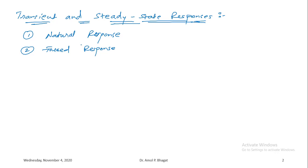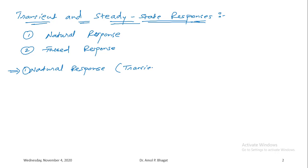In the difference equation topic we discussed how to identify the homogeneous solution and particular solution. From the homogeneous solution we identified the zero input response, which is the natural response of the system — sometimes also referred to as the free response. The natural response of a causal system has a specific generalized form.